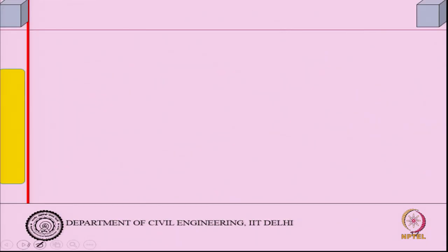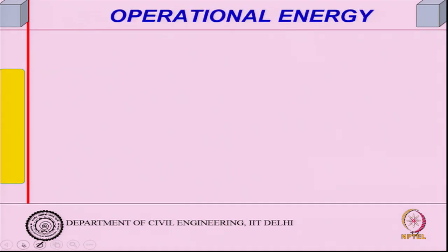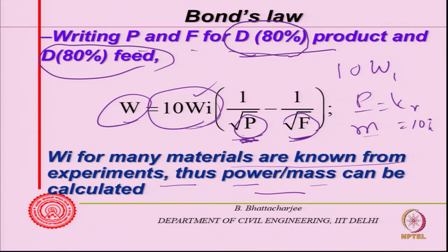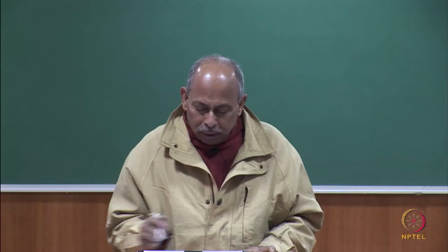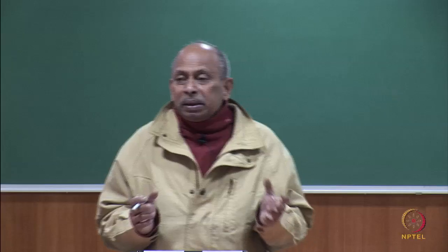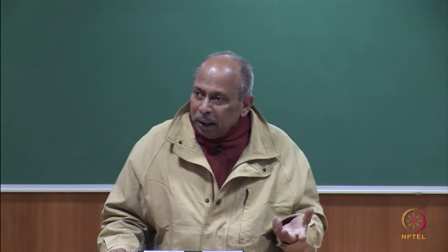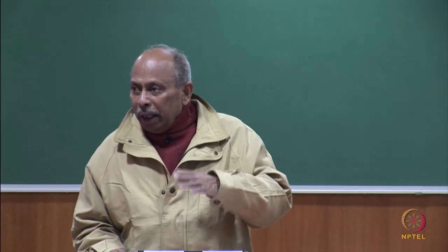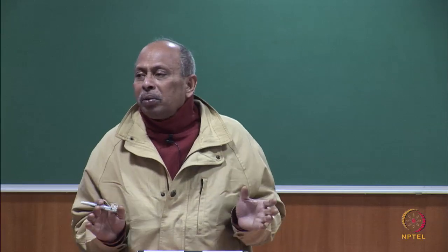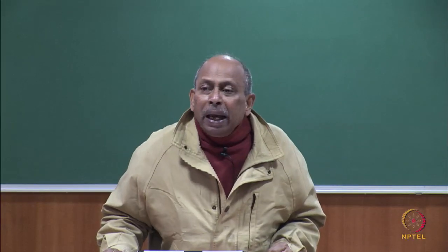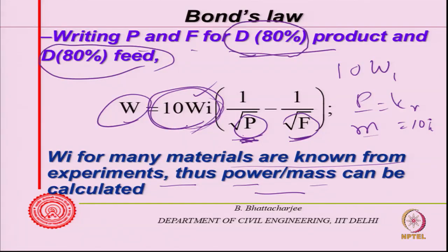That is Bond's law - that is what is used, and people use this concept quite often. This concept can also be used for aggregate if you have a mechanized aggregate processing system. It is used in cement or similar materials in chemical technology - Bond's work index gives the energy or power required P/ṁ in a crusher. Grinding energy can be found out in this way.